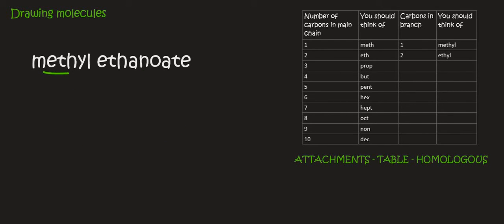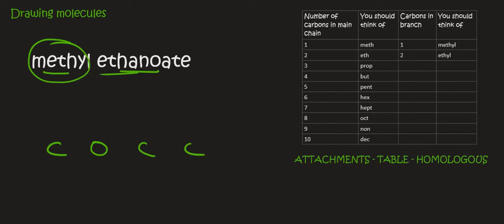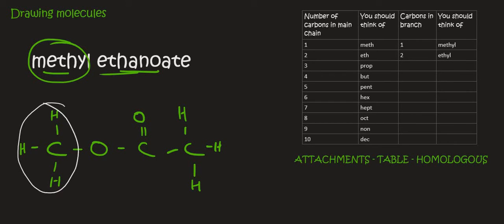Here we have an ester because we've got methyl ethanoate. Remember the alcohol part is always first — so that's going to have one carbon. Then you put an oxygen. Then you do the ethanoate, which is the carboxylic acid part, which has two carbons. This part just has H's; this part has the double bond oxygen. So here's the alcohol part which is the methyl — one carbon — and here's the carboxylic acid part which is the ethanoate.